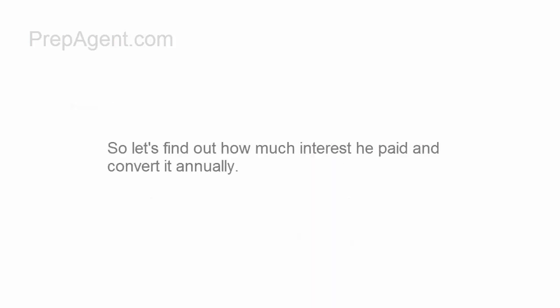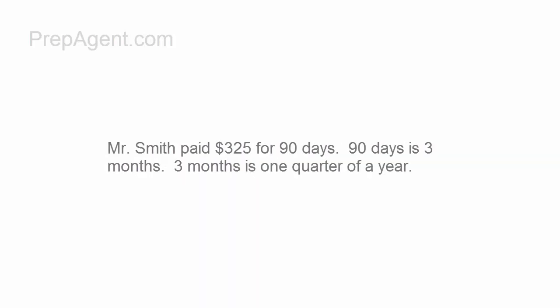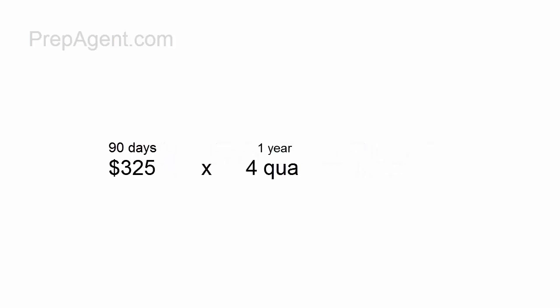So let's find out how much he paid and then convert it annually. Mr. Smith paid $325 for 90 days. 90 days is three months. Three months is one quarter of a year. So $325 times four quarters.